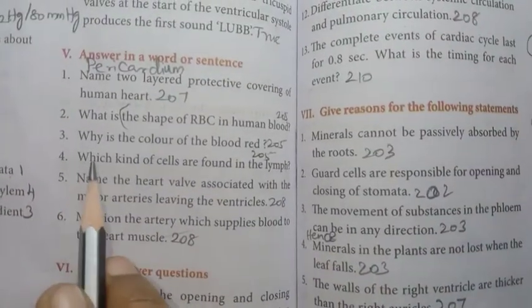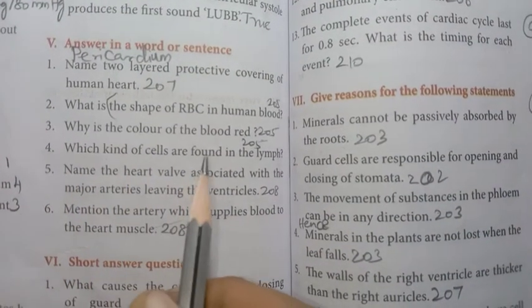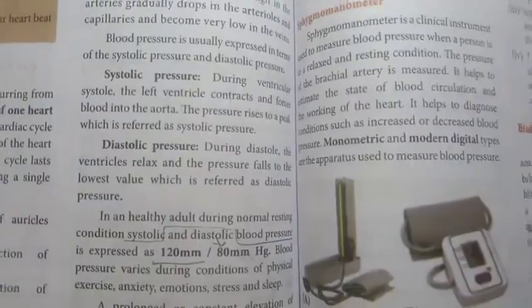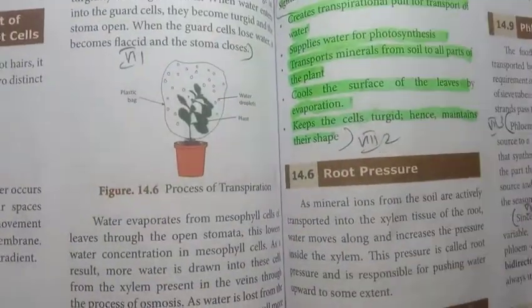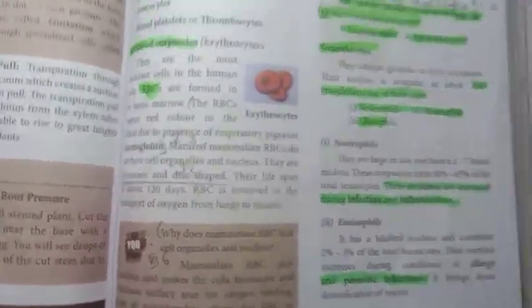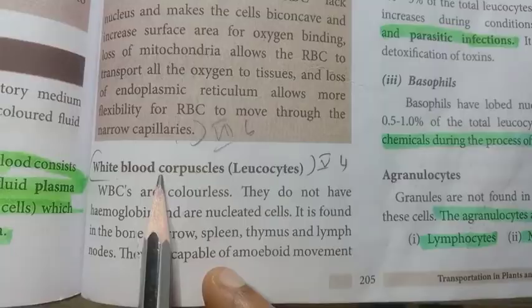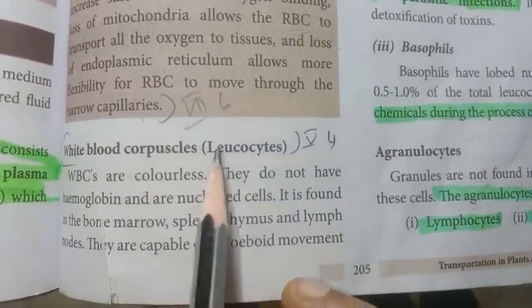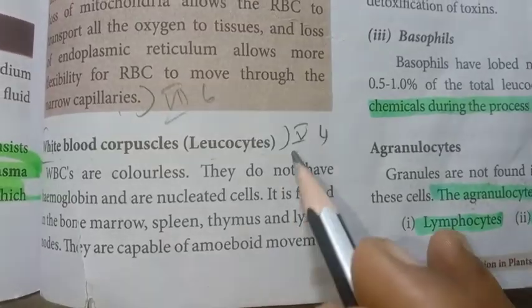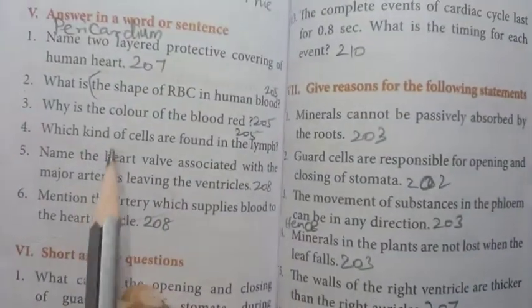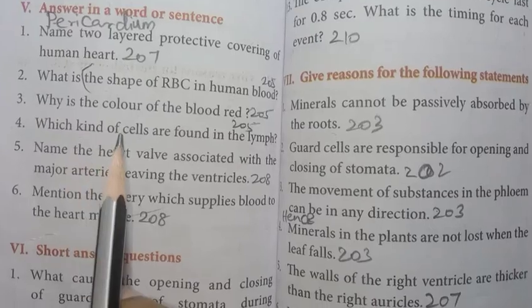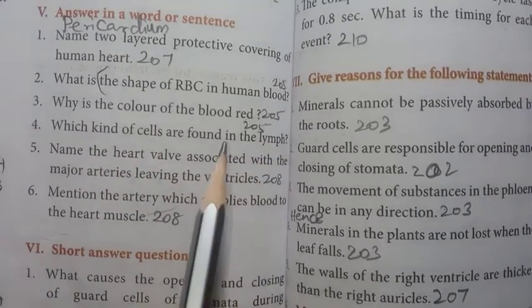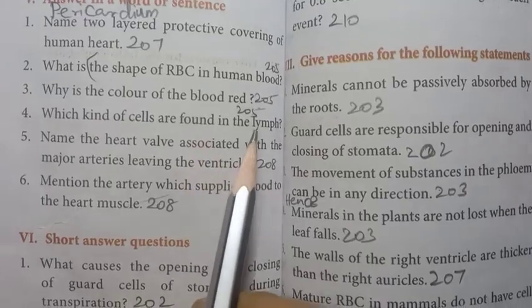Then number four: which kind of cells are found in the lymph? The same page 205, white blood corpuscles, that is leukocytes. Question on the right: white blood corpuscles, leukocytes. The kind of cells are found in lymph is WBC leukocytes.